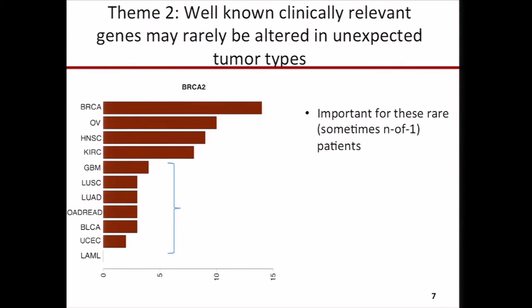Theme two: hotspot and other alterations in well-known clinically relevant genes occur rarely in unexpected tumor types. As expected, we observed BRCA2 alterations in ovarian and breast cancer. However, when excluding patients with mutation rates higher than 10 per megabase pair, we observed BRCA2 alterations in multiple tumor types. These alterations may predict sensitivity to PARP inhibitors or cisplatin-based chemotherapy. For the few patients carrying this alteration in a cohort of, say, 500 patients, this is clinically significant and needs to be identified.